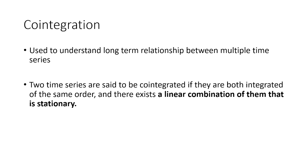Those univariate models deal with only one time series variable — it could be a stock price, stock return, revenue, etc. But time series analysis can also be done using multiple time series, and co-integration is one such technique. In co-integration, the relationship is between multiple time series, whereas in ARIMA the relationship is with the past values of the same time series.